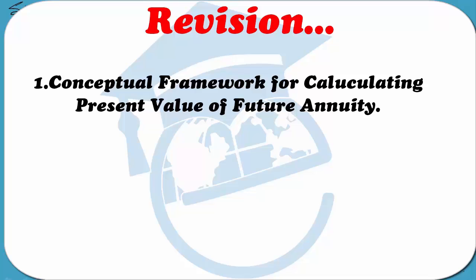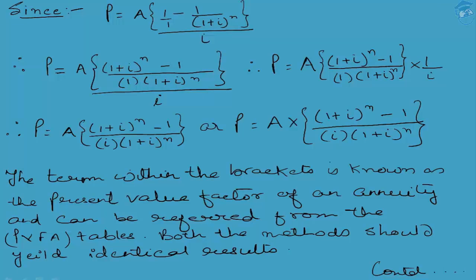It yields the same amount at the end of the nth year which is obtained by the future value of the annuity calculations. From the formula point of view, P into (1 + i)^n was equal to A times [(1 + i)^n - 1] / i. That is, the future value of a lump sum was equal to the future value of an annuity, and using that formula we tried to derive the formula for P.